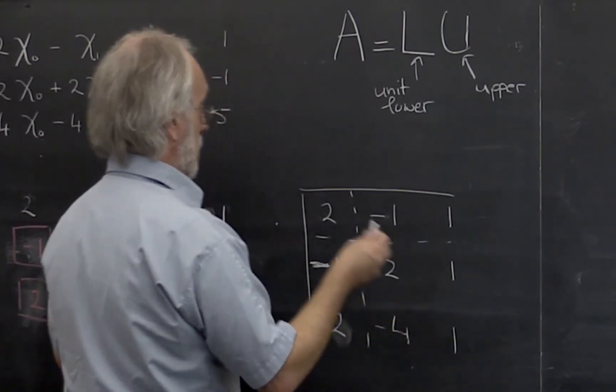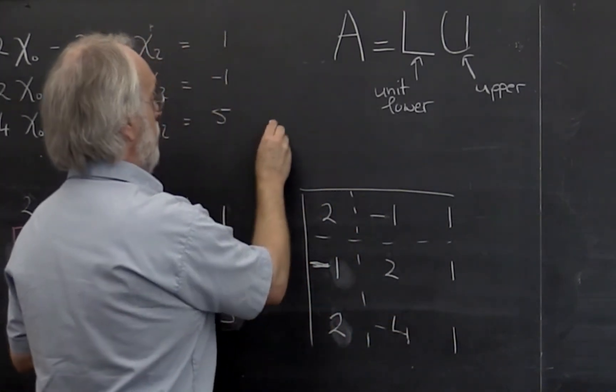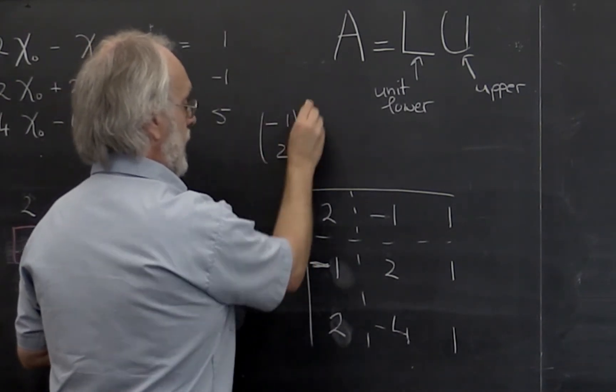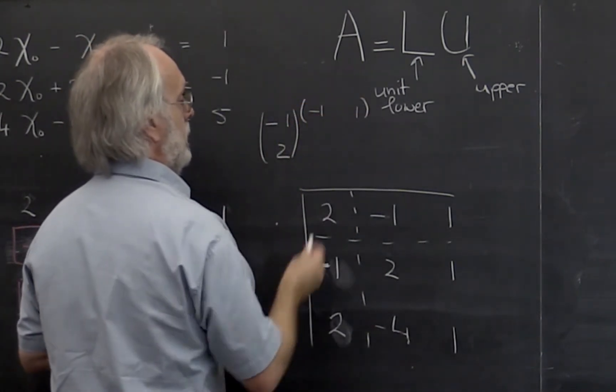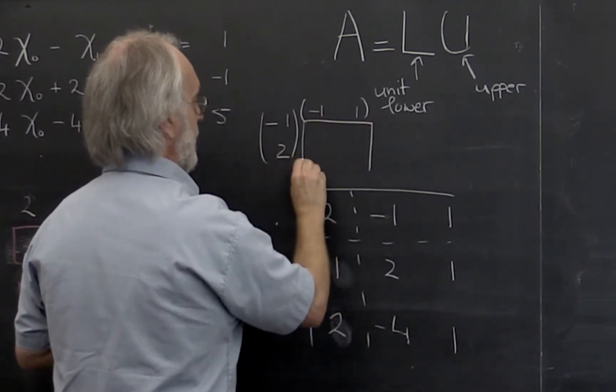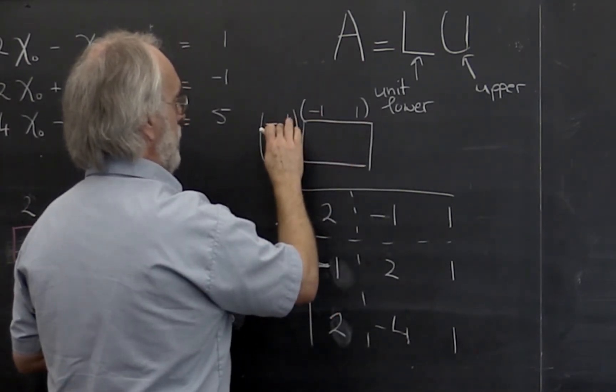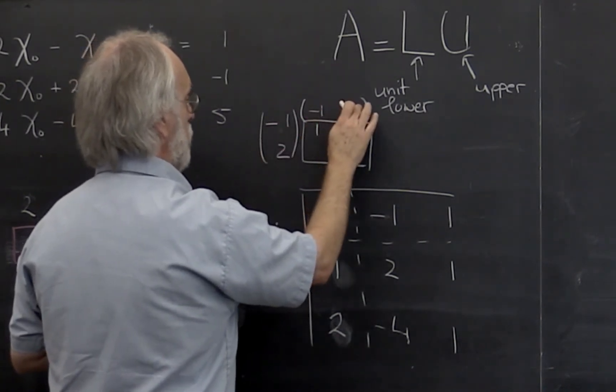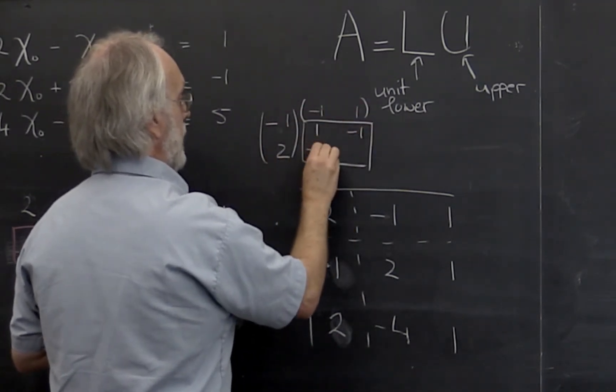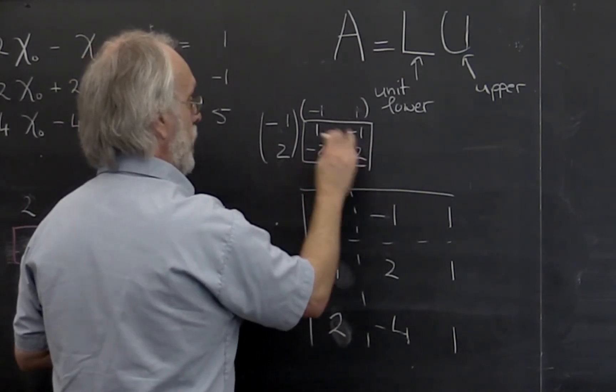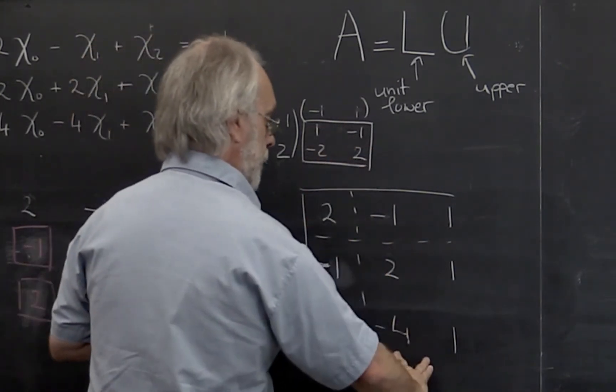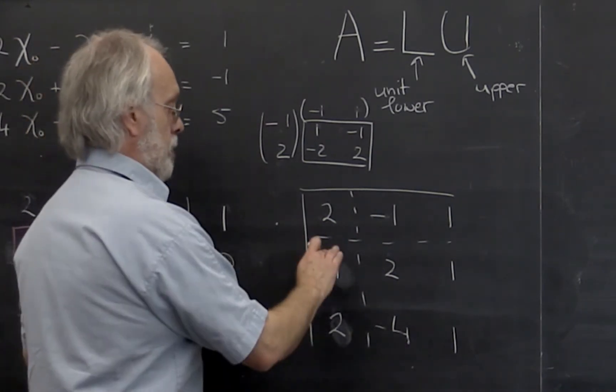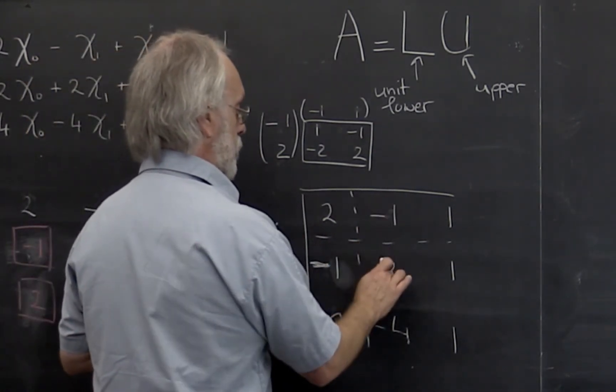Now let's take a little side tour. If you do minus 1, 2 times minus 1, 1, then the matrix that you get is minus 1 times minus 1 is 1, minus 1 times 1 is minus 1, minus 2, 2. That needs to be subtracted from this matrix sitting right here. So really it means this times that is subtracted from that.